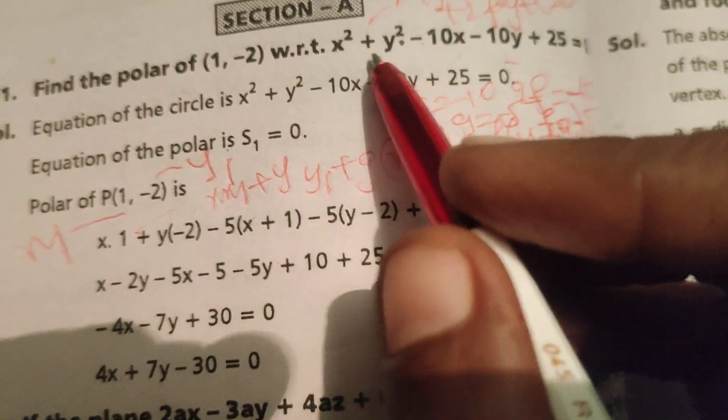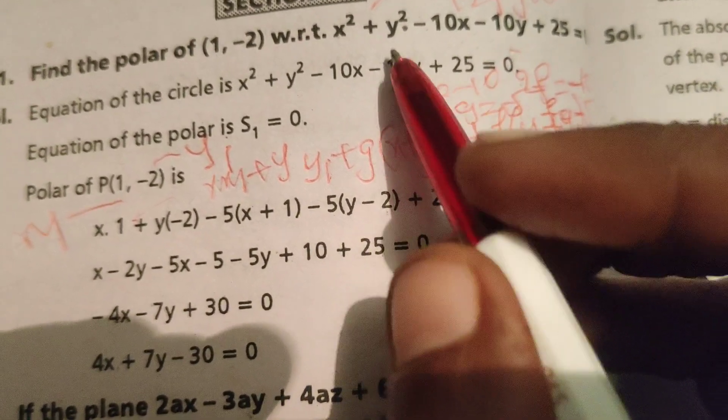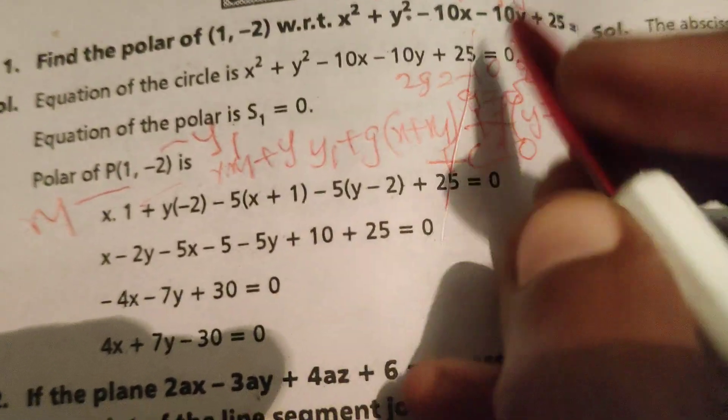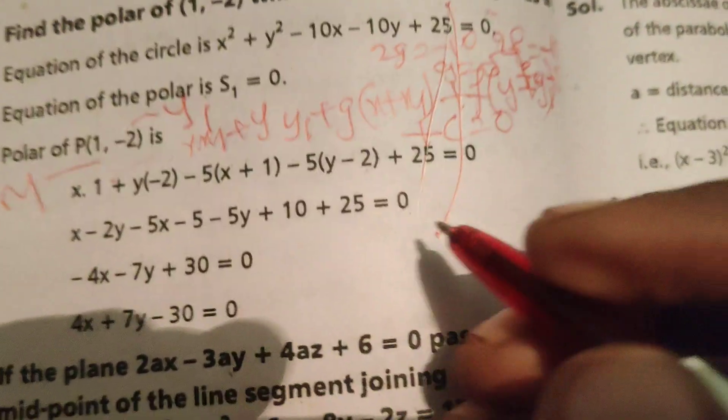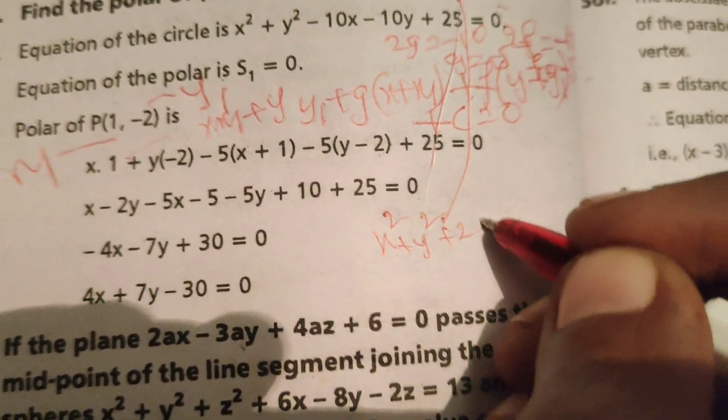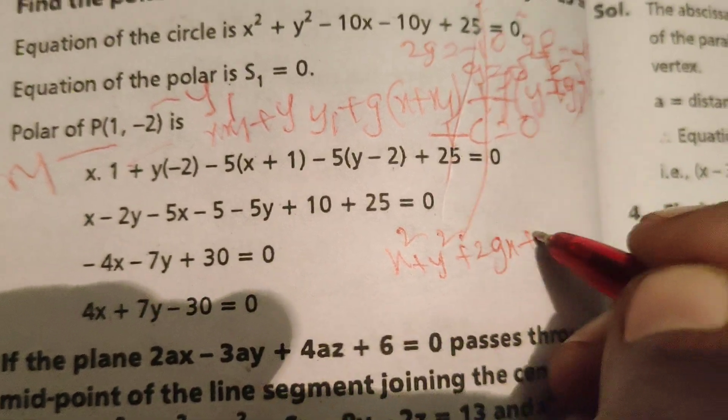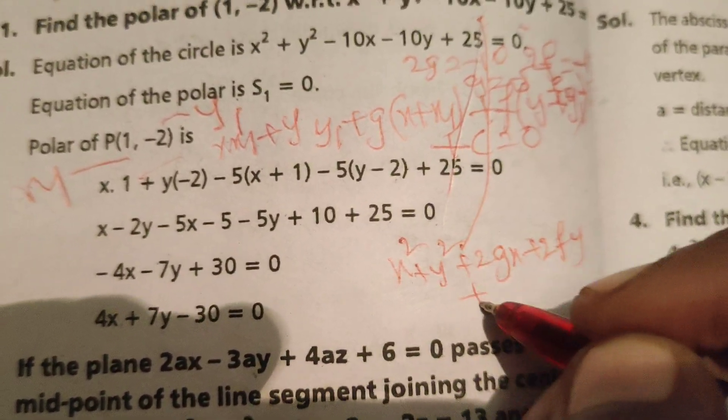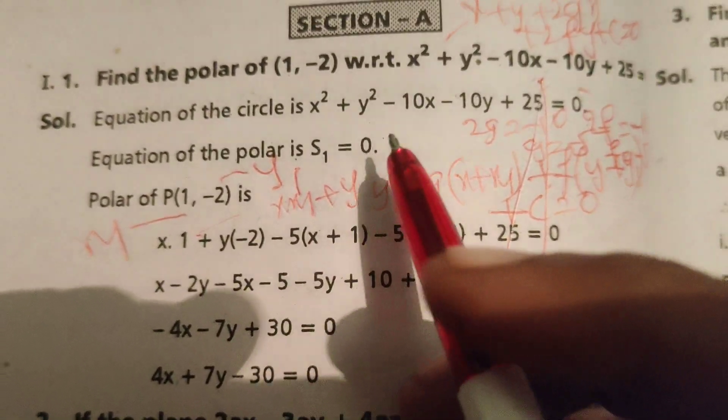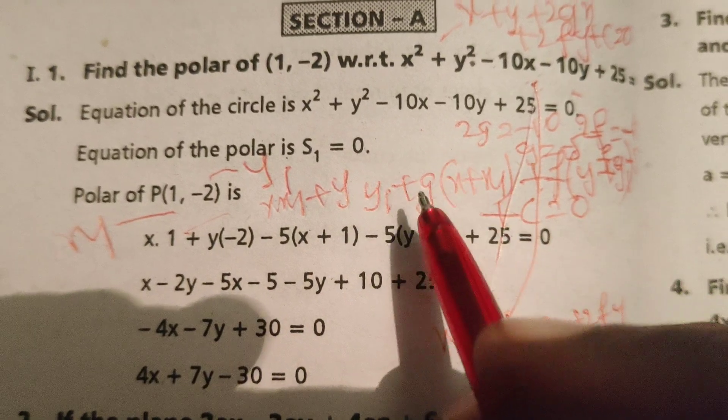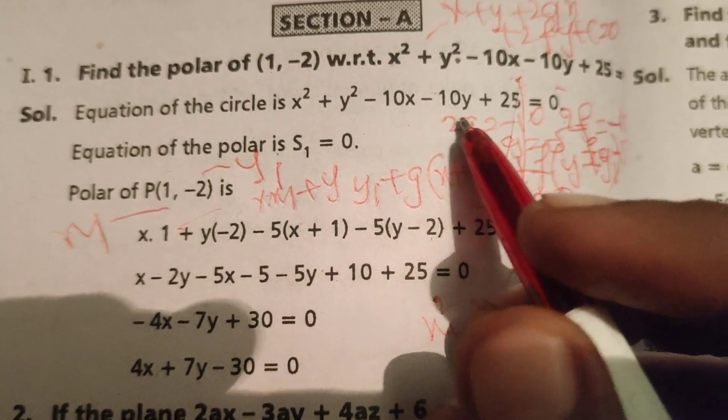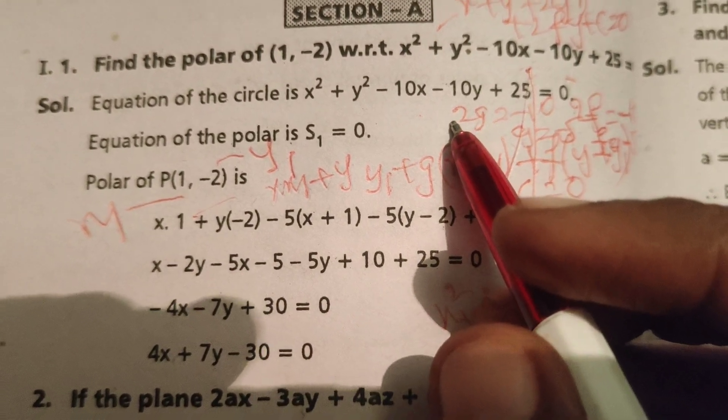Comparing this equation with the standard circle equation x² + y² + 2gx + 2fy + c = 0, we get 2g = -10 so g = -5, and 2f = -10 so f = -5.